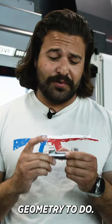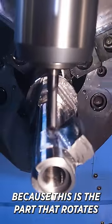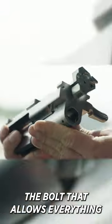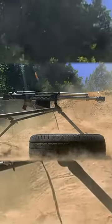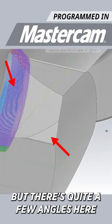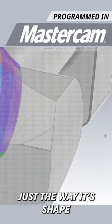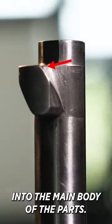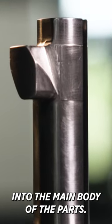This is pretty difficult geometry to do, this pan lug especially, because this is the part that rotates the bolt that allows everything to lock up properly. Now it doesn't look like much at first glance, but there's quite a few angles here, just the way it's shaped and how it kind of curves into the main body of the parts.